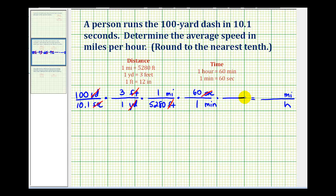And the last step is to convert minutes into hours. So we'll have minutes in the numerator, hours in the denominator. And the conversion is 60 minutes is equal to 1 hour. Notice how we have miles in the numerator and hours in the denominator. So now we need to multiply these fractions together.